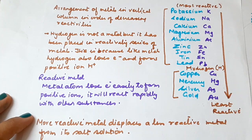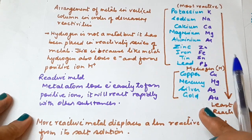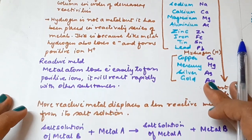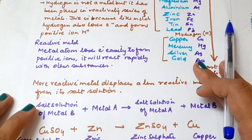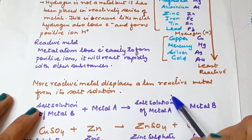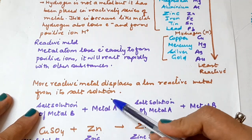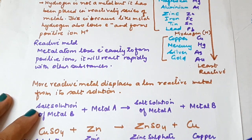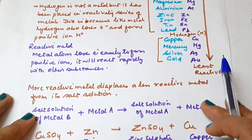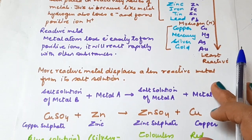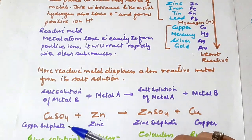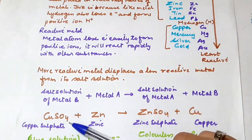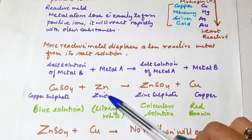We are going to learn that a more reactive metal displaces a less reactive metal from its salt solution. Let's take an example and understand this. For example, copper sulfate — this is a salt solution — reacting with zinc: copper sulfate plus zinc.